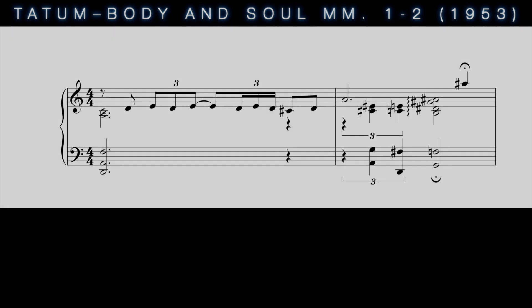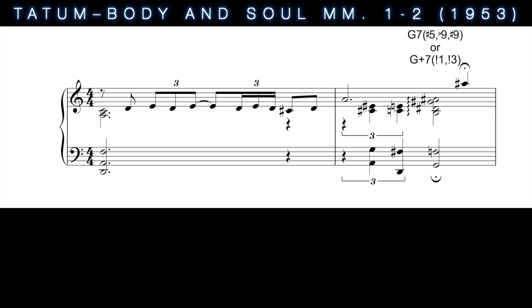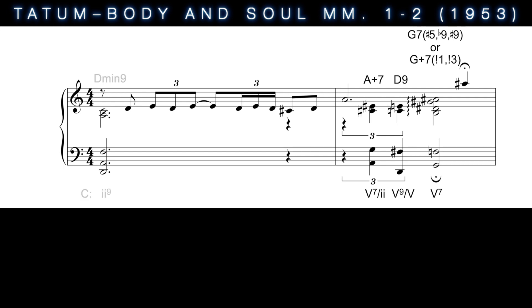Split interval chords would later be taken up by jazz musicians, most frequently in the form of altered dominants. In Art Tatum's 1953 recording of 'Body and Soul,' he punctuates the opening phrase with a colorful G7♯5♭9♯9 — a chord with two split intervals, roots and thirds. This chord emphasizes the goal of the back-cycle dominants heard before, and acts as a dominant, V, to the opening measure's supertonic, or II chord.